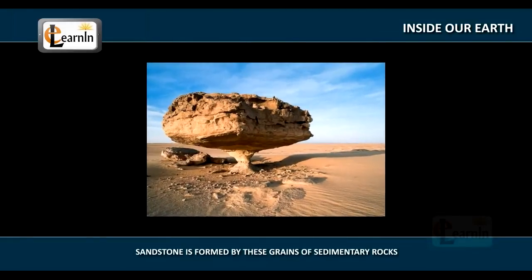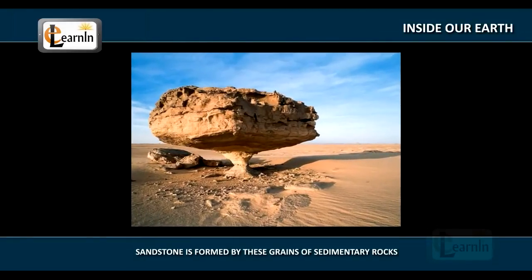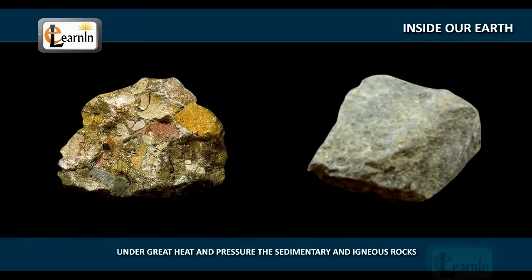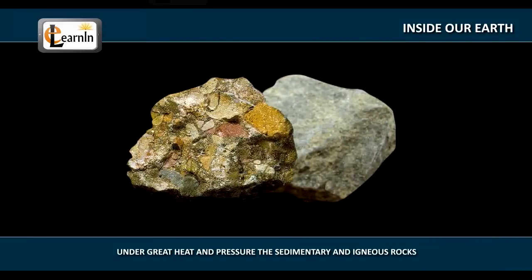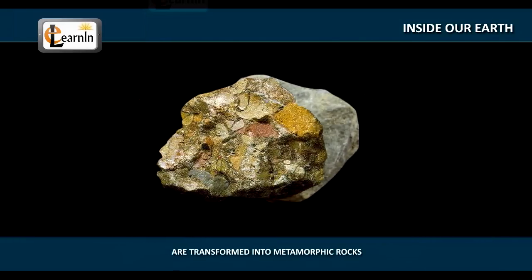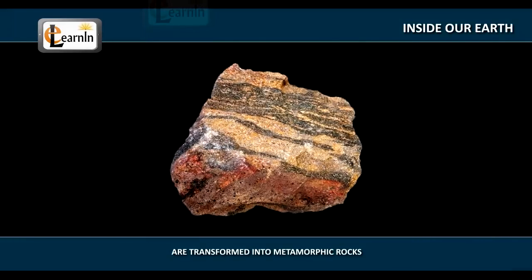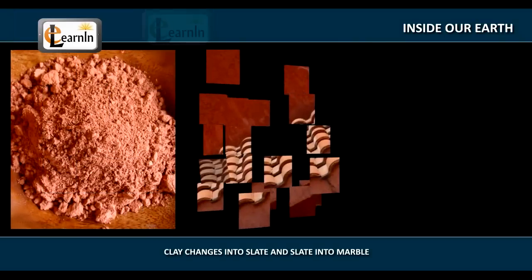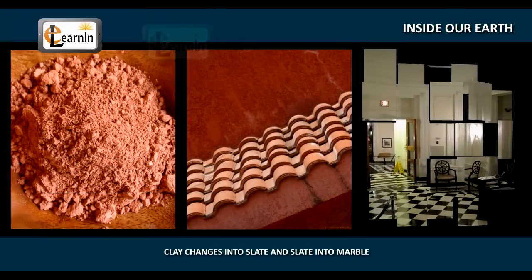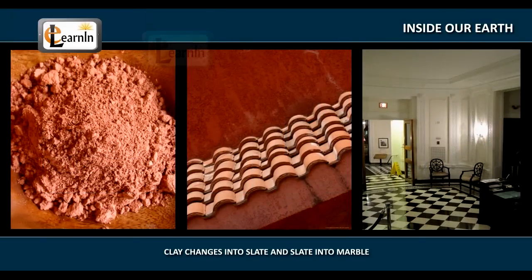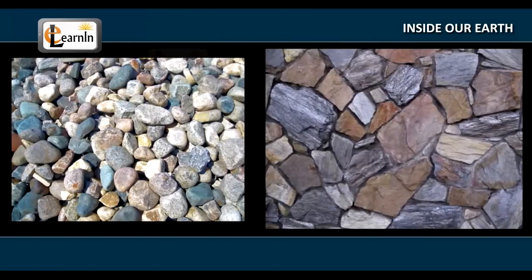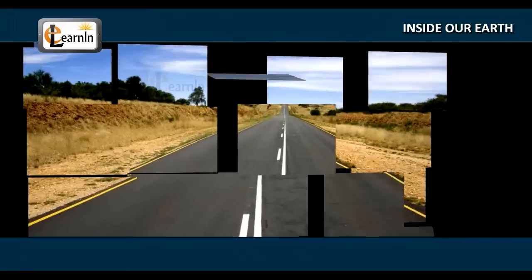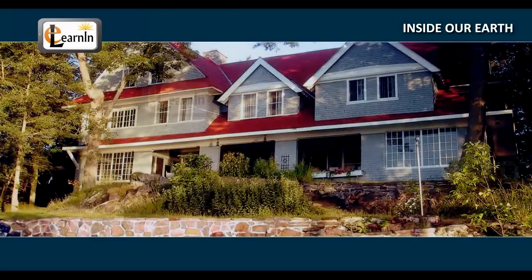Sandstone is formed by grains of sedimentary rocks. Under great heat and pressure, the sedimentary and igneous rocks transform into metamorphic rocks, just the way in which clay changes into slate and slate into marble. Rocks are used to make roads, buildings and houses.